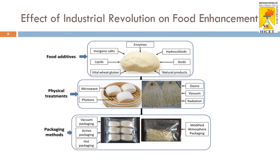What is the effect of the industrial revolution on food enhancement? Based on techniques followed in earlier ages, after the industrial revolution three major food enhancement techniques came into role. First, food additives — for example, addition of enzymes or hydrocolloids to bakery products to improve texture and appearance. Second, physical treatments like microwave, ozone, vacuum, and radiation to improve shelf life. Third, packaging methods like vacuum packaging or active packaging to preserve foods for a longer period of time.